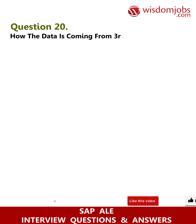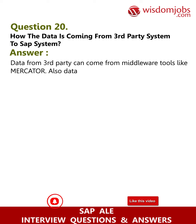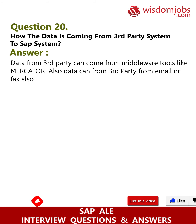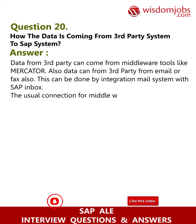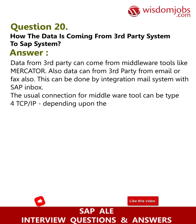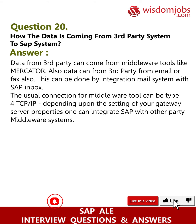Question 20: How does data come from a third-party system to the SAP system? Answer: Data from a third party can come from middleware tools like Mercator. Also, data can come from a third party via email or fax. This can be done by integrating the mail system with the SAP inbox. The usual connection for middleware tools can be type 4 TCP/IP depending upon the settings of your gateway server properties.